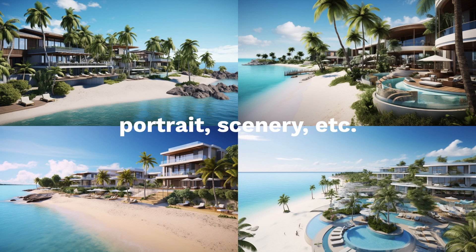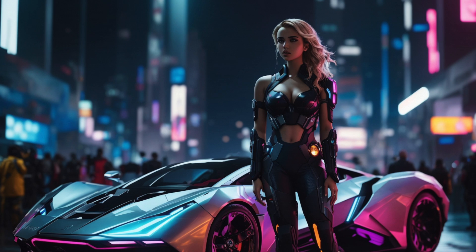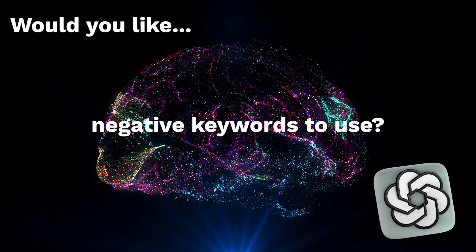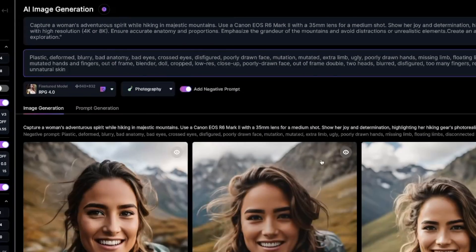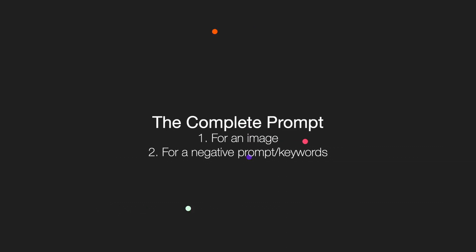What do I mean by that? You're first going to start by telling it what style of prompt you want it to create — like photo realistic, portrait, scenery, etc. Then you're going to provide a description of the type of image you want, like a lion in the jungle or a modern woman in a futuristic city. Then ChatGPT is going to ask you if you would like it to provide a series of negative keywords to use in Leonardo AI's negative prompt box. Just say yes, and boom — everything in one complete package. It's the complete prompt for the image you want to generate plus all of the negative keywords.